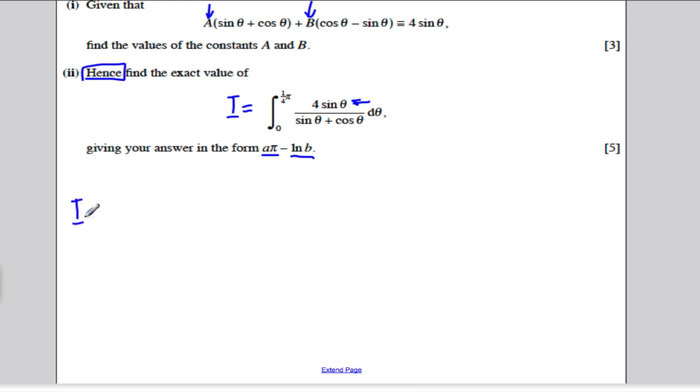I could also say that I was equal to the following. Replacing 4 sine theta with what we found earlier on, I would say that this is the same as 2, because A was 2, sine theta plus cos theta. And then minus 2,